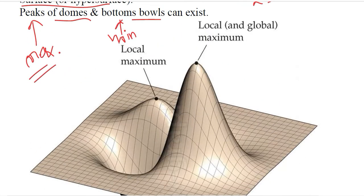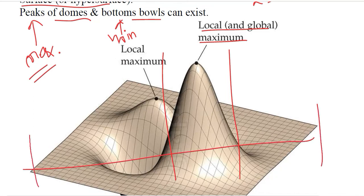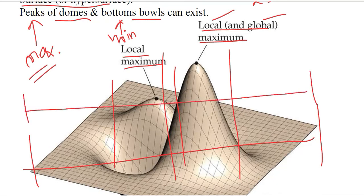Below we have a bowl, and above we have peaks. At the peak of the dome we can say we have a local and global maximum. In this range it is a local maximum, but if we consider the whole range it is also the global maximum. However, if there is another peak higher than this one, then this is only a local maximum.